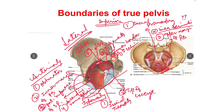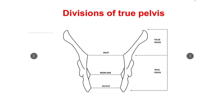तो हमने चारों borders पढ़े: superior border, lateral border, anterior border, and inferior borders of the true pelvis. Next हम पढ़ते हैं divisions of true pelvis. Pelvis के तीन divisions किये गए हैं: first is inlet, second is cavity (or mid-plane, but cavity is the most commonly used word), and third is outlet.